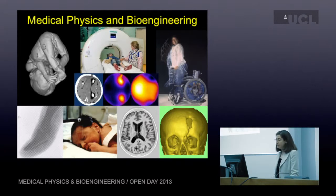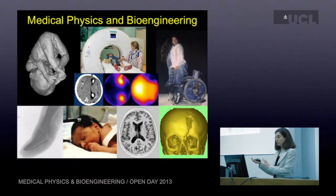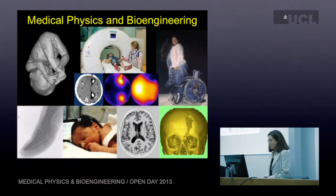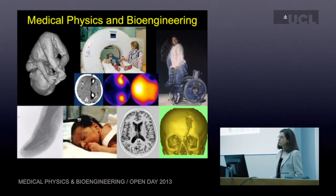Up on the top left we've got an ultrasound image of a fetus. In the middle at the top you can see a CT scanner with somebody in it and somebody standing next to them. On the top right we've got somebody who has been helped by some prosthetics and some neurostimulator implants. On the bottom right we've got a skull image made using that CT scanner, showing a defect which medical physics and bioengineering techniques can actually help repair.